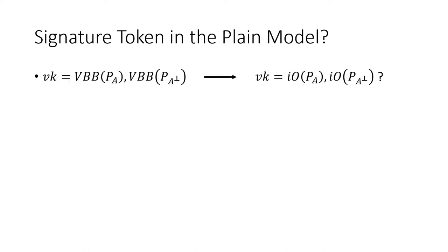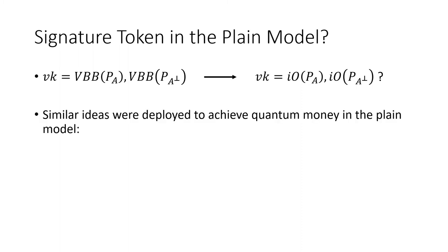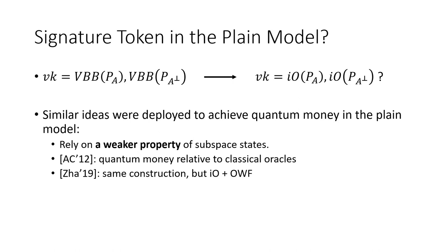As we saw, the verification key is VBB obfuscation of oracles. To achieve the construction in the plain model, one natural attempt is to replace VBB obfuscation with IO. A similar idea was deployed to achieve quantum money in the plain model. In 2012, Aaronson and Christiano showed quantum money with respect to classical oracles, relying on a weaker property than direct product hardness. Later in 2019, Zhandry showed the same construction works in the plain model by instantiating the obfuscation with IO.